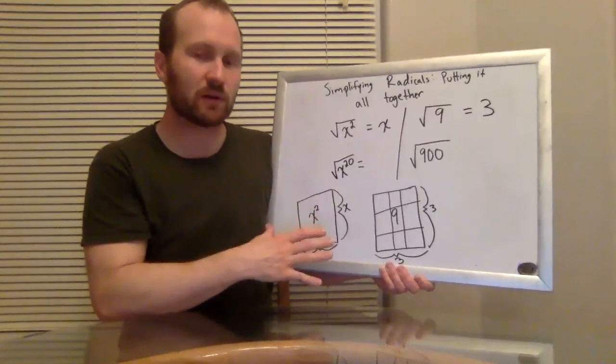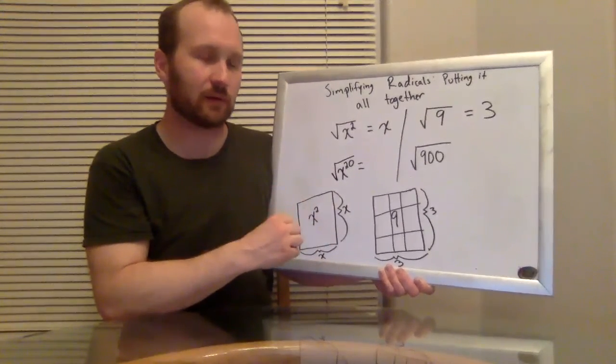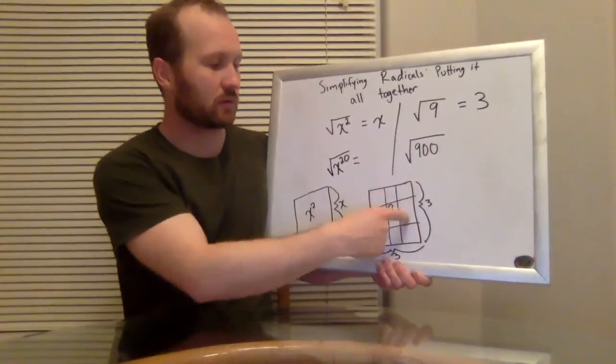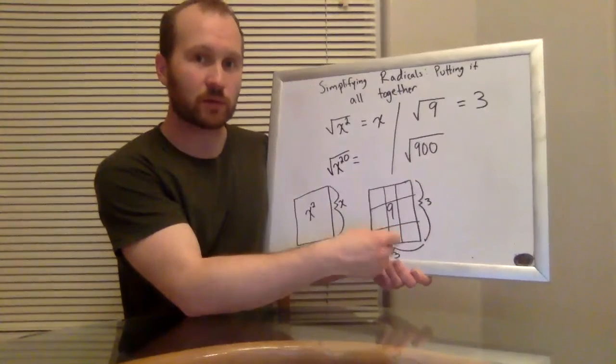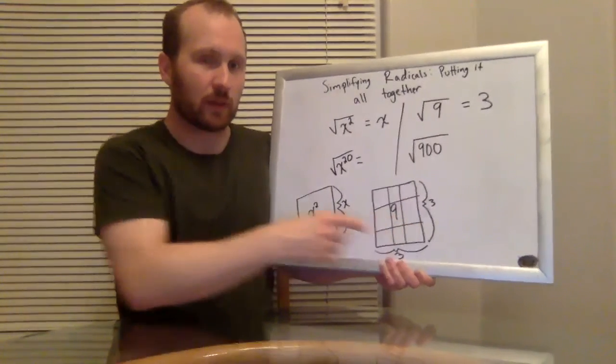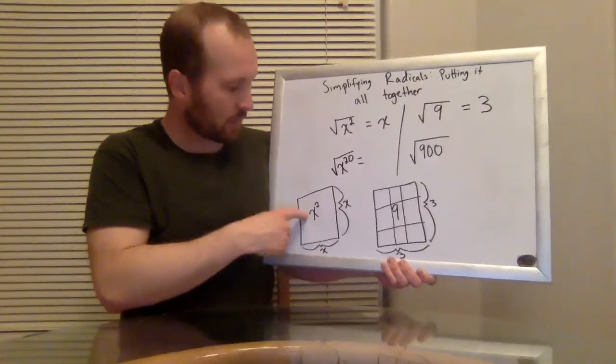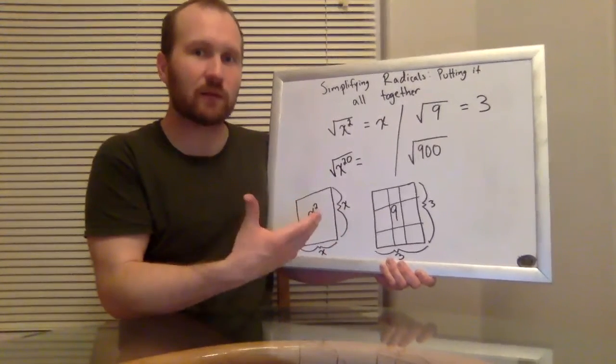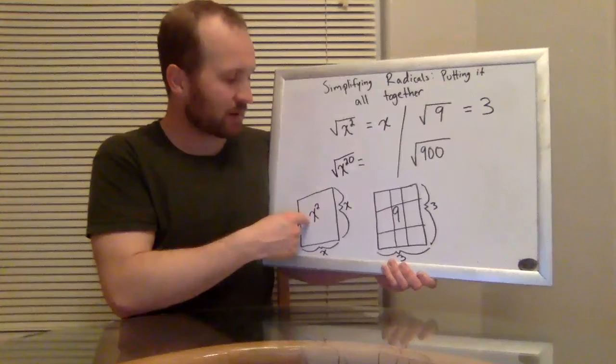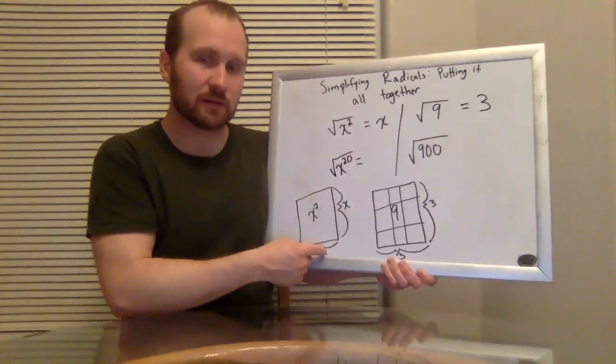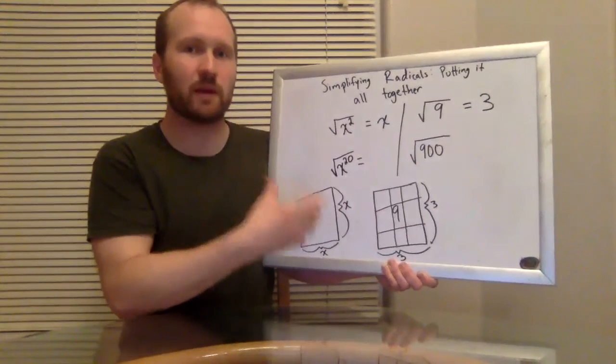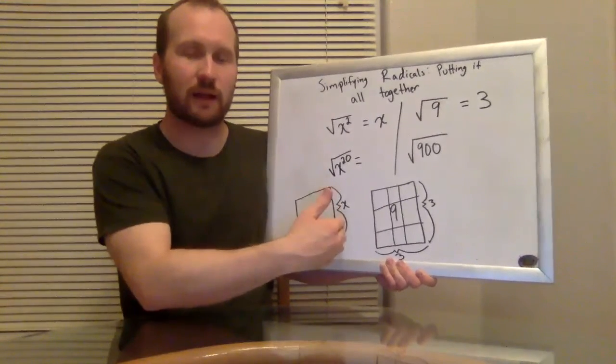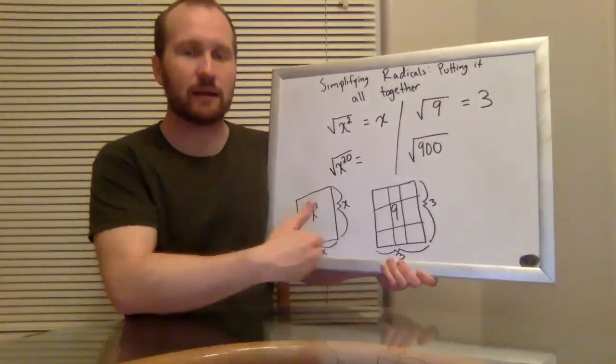Now with the variables, it's much harder to think of adding things together. With the numbers, I can think of, okay, nine is three plus three plus three. But nine is also three times three. And that's where the variables come in. X squared is not x plus x plus x, you can't represent it with a sum, but x squared is x times x. So think of the area of a square being multiplication, length times width, the square root as being the opposite of that, finding one side of that square.